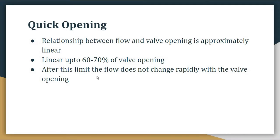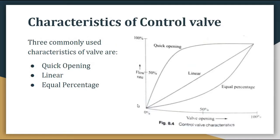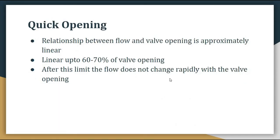After this limit, the flow does not change rapidly with the valve opening. On the x-axis we have valve opening, and on the y-axis we have flow rate. As we move along the x-axis, we are opening the valve more, and as we move along the y-axis, the flow rate of the fluid increases. In quick opening, up to 50 to 60 percent of valve opening, the characteristic is almost linear. After that, valve opening keeps increasing but flow cannot follow it as rapidly.